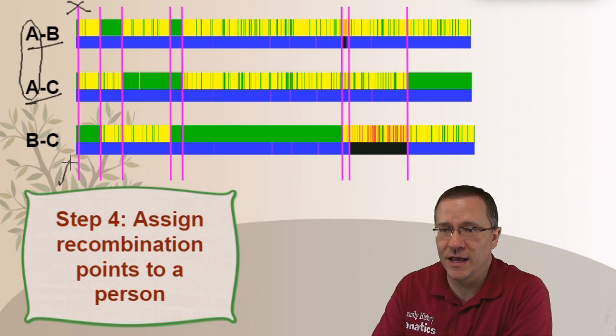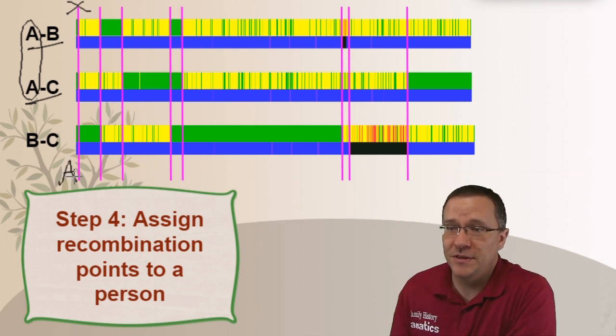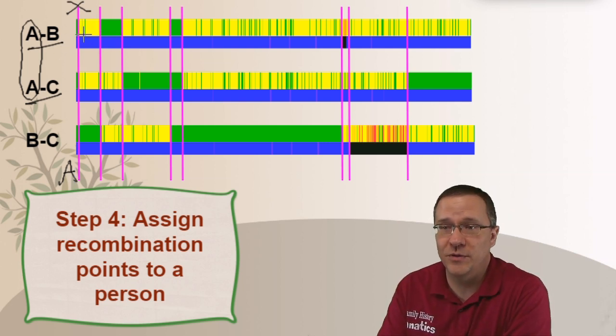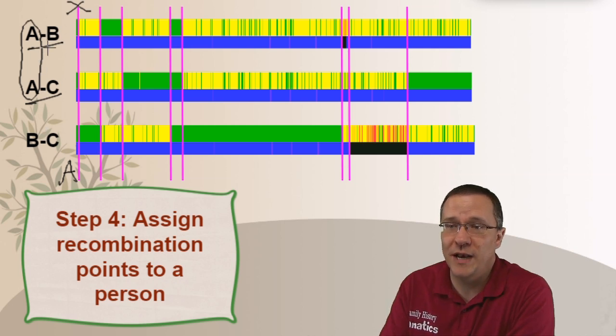Now we go to this second one and we see that it's going from yellow to green. So that's an AB. And it doesn't change on AC right here. But down on BC it goes from green to yellow. So what's common between AB and BC? That's going to be B. So this next one is going to be B.